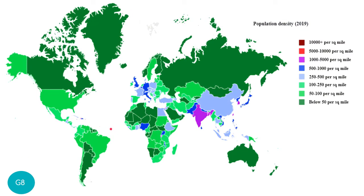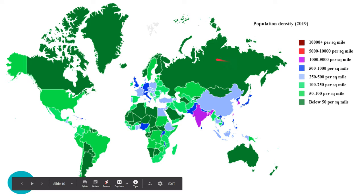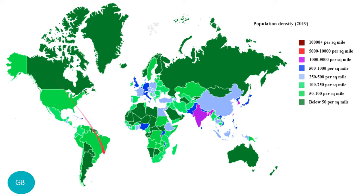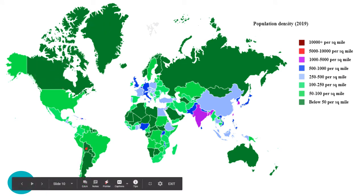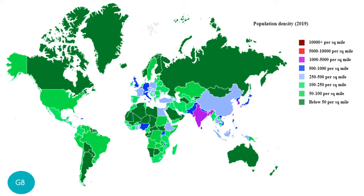This is a world map showing population density of humans as of 2019. Countries with below 50 humans per square mile include Australia, Russia, Mongolia, some parts of Africa, Greenland, Canada, Argentina, Bolivia, Paraguay or Uruguay, and New Zealand — these countries have very few people per square mile.